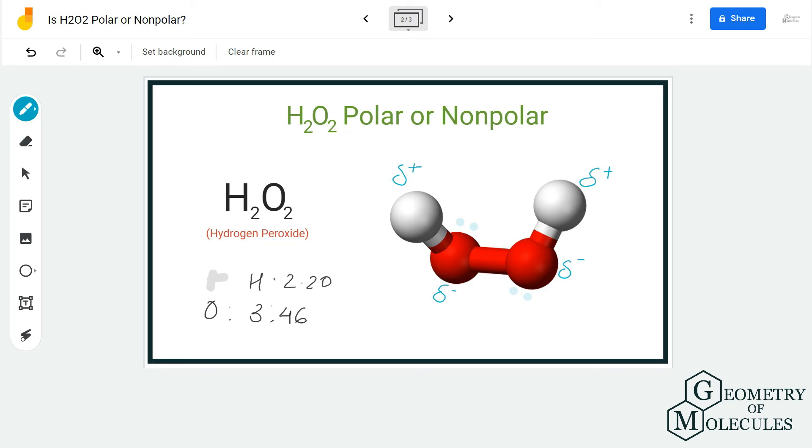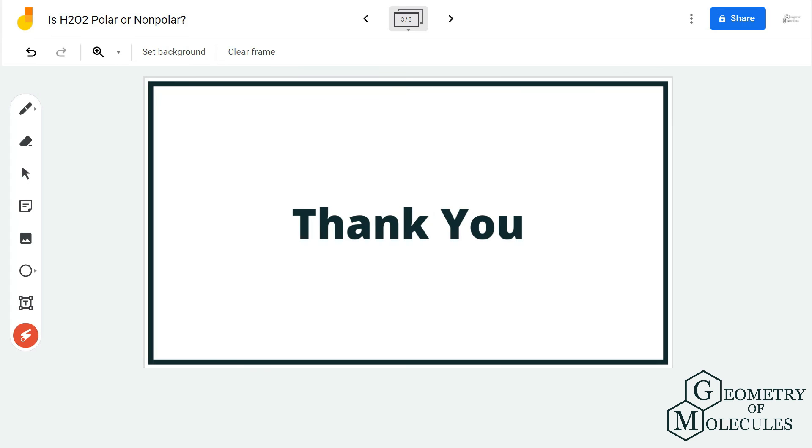There is an uneven distribution of charges in the molecule due to the net dipole moment. H₂O₂ or hydrogen peroxide is a polar molecule. I hope this video helps you understand the polarity of this molecule. For more videos on Lewis structure, polarity, molecular geometry, and hybridization of molecules, make sure to subscribe to our channel. Thank you for watching.